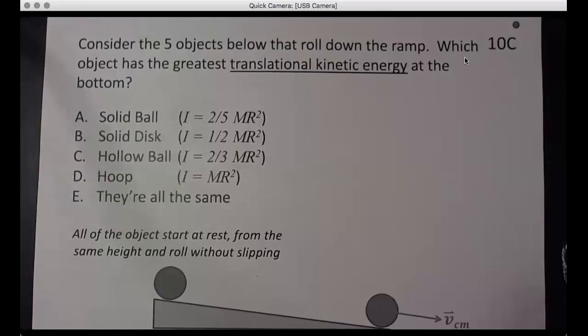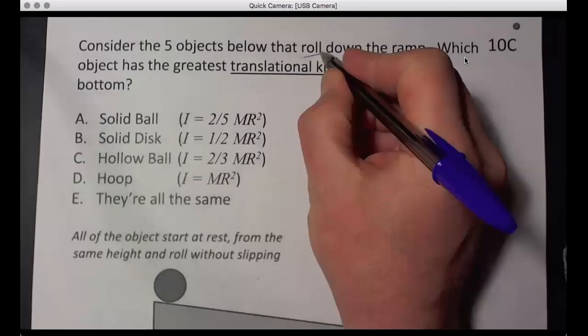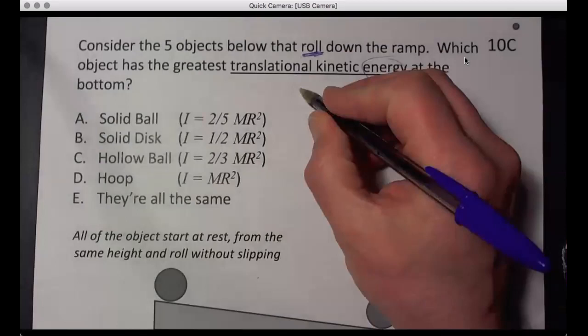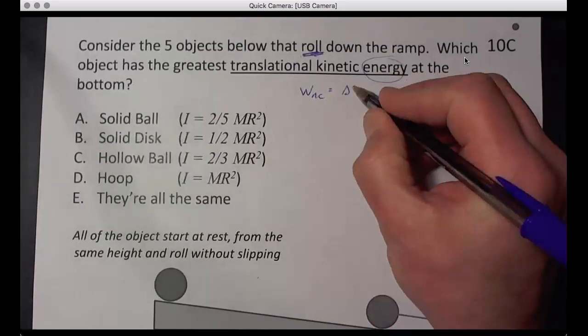So roll is critical here. We assume it's roll without slipping. Which has the greatest translational kinetic energy at the bottom? Well, we're talking about energy, so that makes us think of work non-conserving equals delta KE plus delta PE.